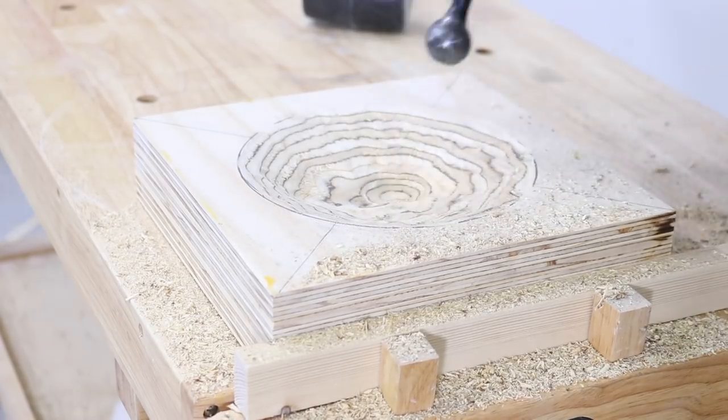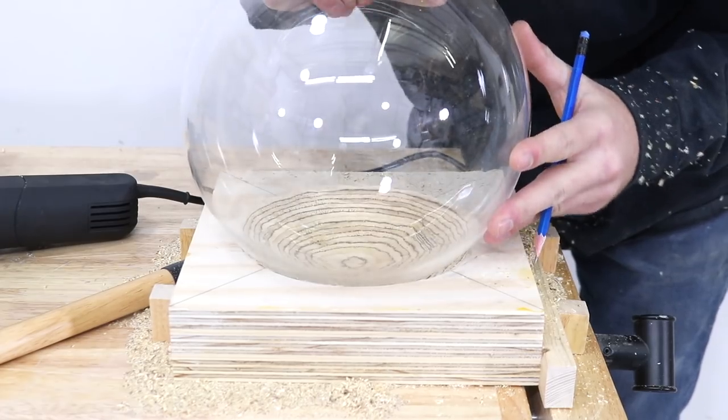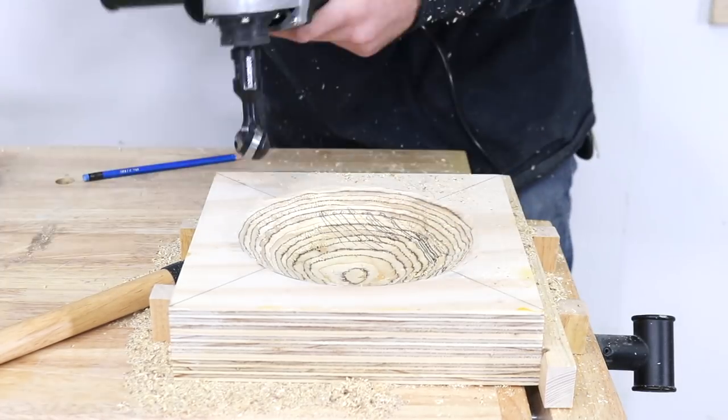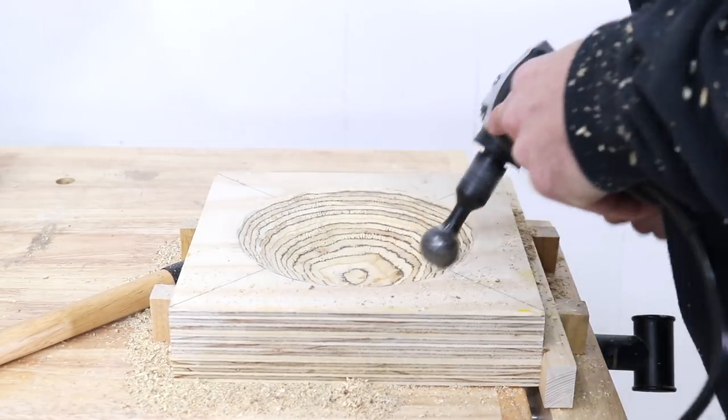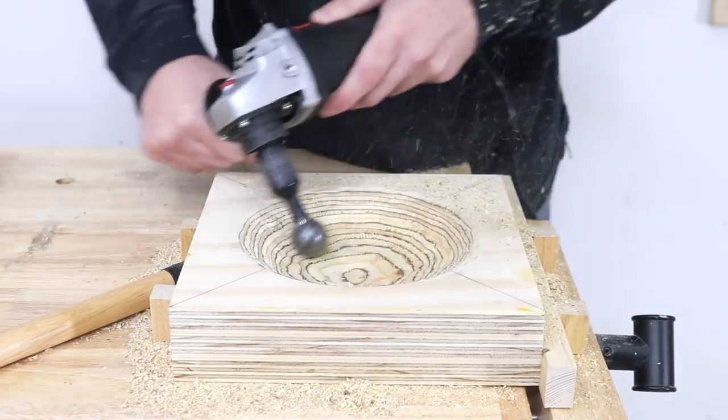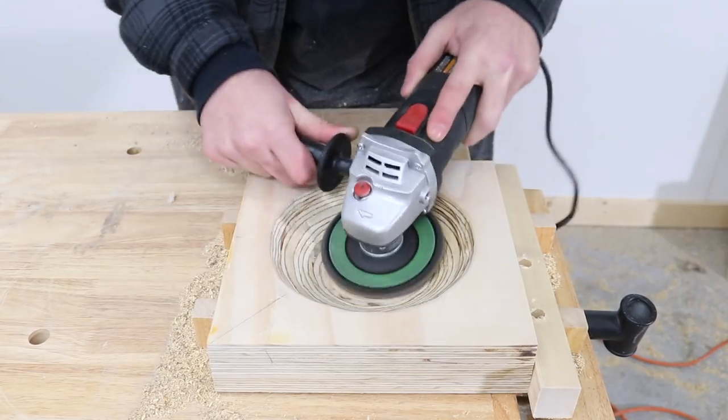I worked from the center out and once I had a decent recess carved out I just kept putting the globe in and out using a pencil to mark where I needed to cut back so that it would sit flush around the rim. It didn't have to touch everywhere perfectly on the bowl but as long as it sat nicely on the top then everything would look right.